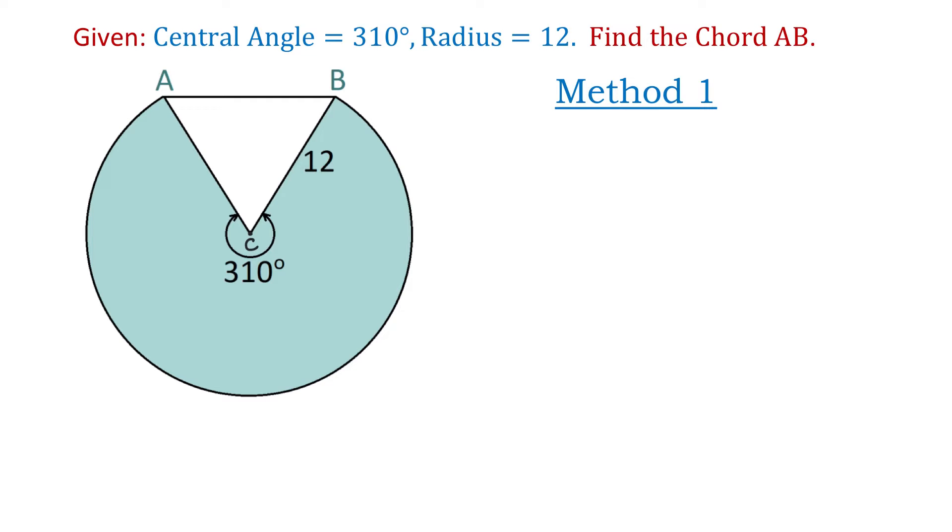In this figure we have a central angle that measures 310 degrees. A central angle is an angle whose vertex is at the center of a circle. The radius of the circle is 12 units and we will find the length of the chord AB.